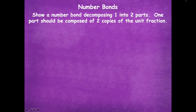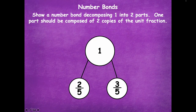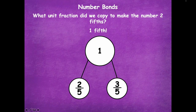Now show your number bond decomposing one into two parts. One part should be composed of two copies of the unit fraction. The unit fraction was one-fifth, so one part represents two copies of one-fifth, and then you determine the other part. Pause the video, draw your number bond, and click play when ready. Here's my one whole. Two copies of one-fifth is two-fifths. Counting on, three-fifths would be the other part. What unit fraction did we copy to make two-fifths? One-fifth. One-fifth and one-fifth make two-fifths.